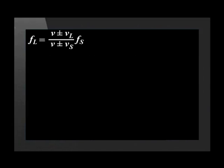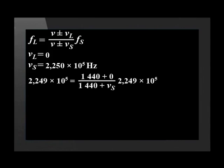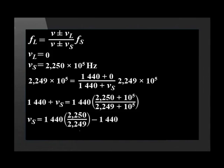Write the main Doppler effect equation. The velocity of the listener V_L is zero. We substitute in the other values — remember the blood is the source, and the frequency at the source is the same as the frequency transmitted. Simplify and make the denominator the subject of the formula: 1440 plus velocity of the source. We find the speed of the blood to be 0.64 meters per second.